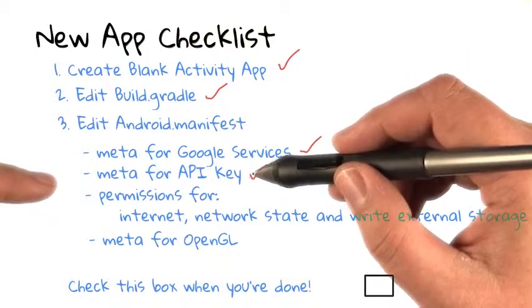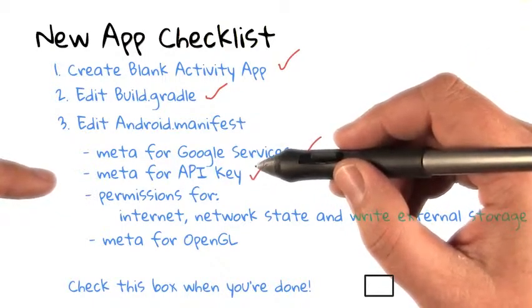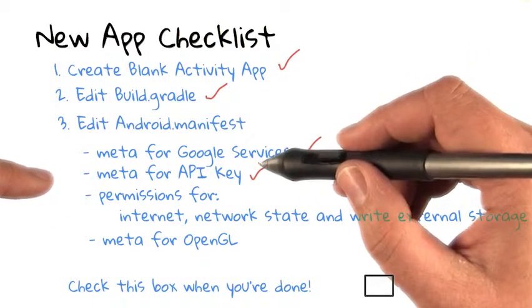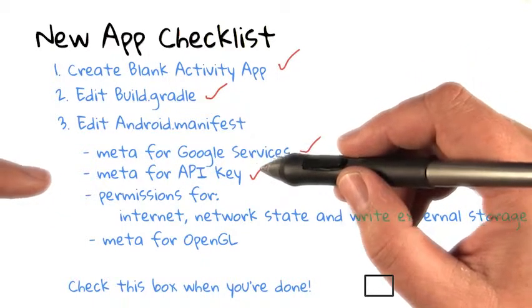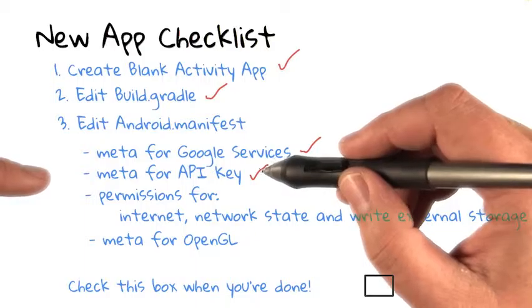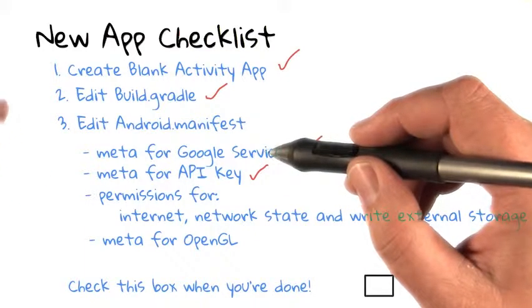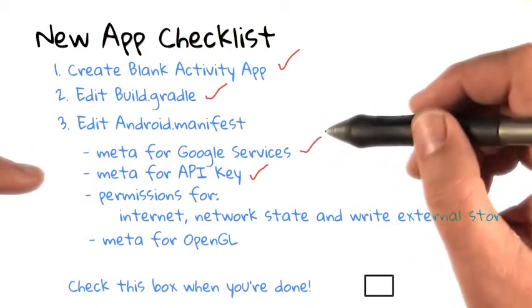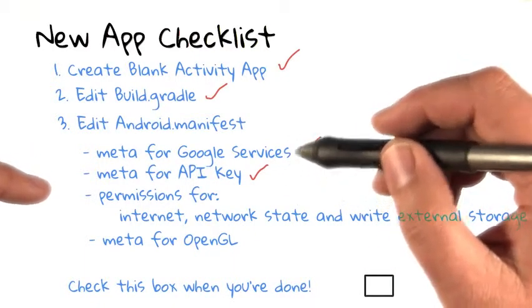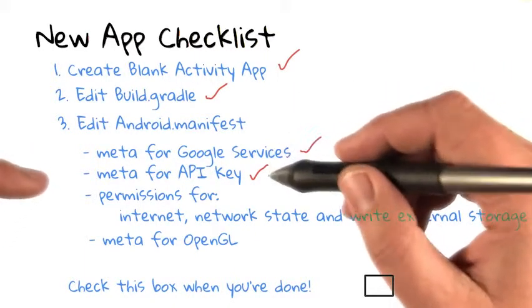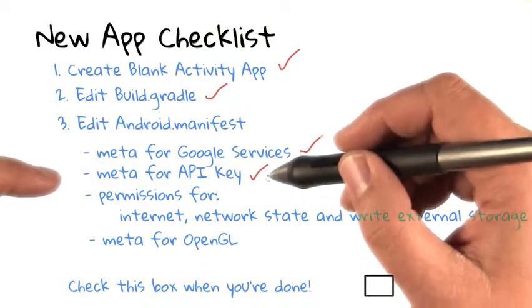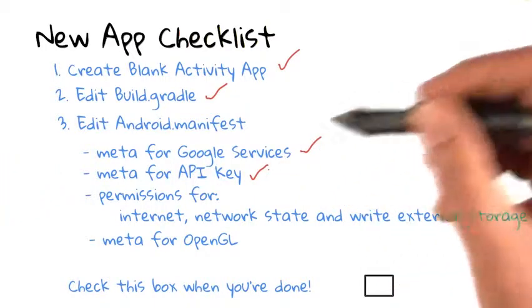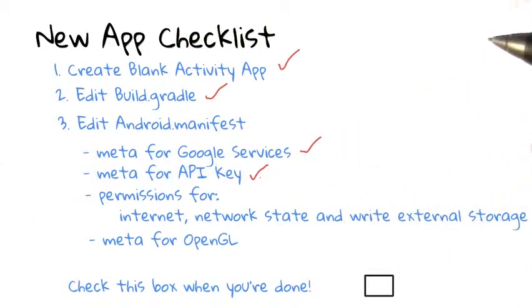Don't forget to go on to the Google Developers Console and add a new instance of the SHA1, followed by a semicolon, followed by this app's name so that it will be valid for that API key. You've seen how to do that before.